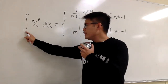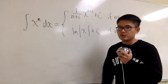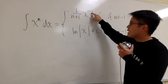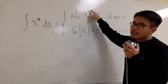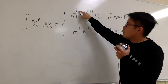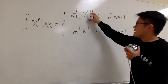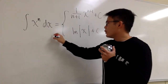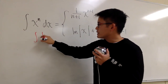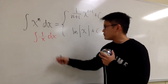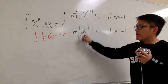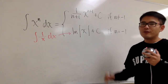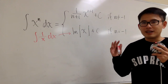To summarize: whenever we integrate x to the nth power dx, we have two cases. First, the usual situation when n is not equal to negative one: add one to the power to get x to the n plus one, then divide by the new exponent n plus one, which is the same as multiplying by one over n plus one, and add plus C. Second, when n equals negative one — that is, integrating 1 over x dx — the answer is ln of the absolute value of x, plus C. Be sure to always attach the absolute value. This is the first technique for integrations — check out the next video for worked examples.